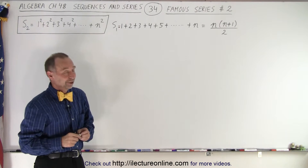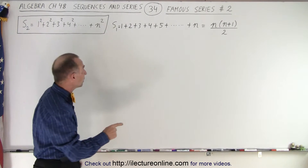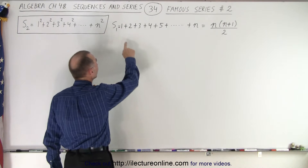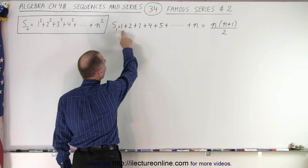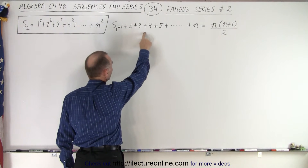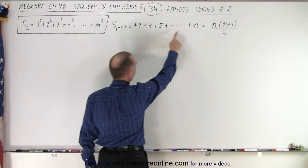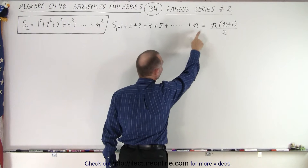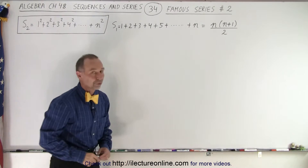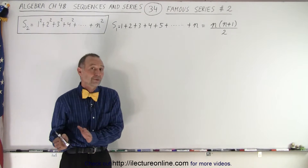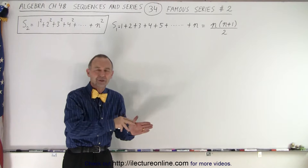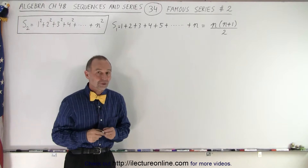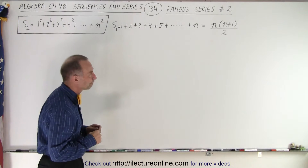It takes a little effort. We also need to remember that this sum right here — 1 plus 2 plus 3 plus 4 plus 5 all the way up to n — is equal to n times n plus 1 over 2. We've already shown you that in the previous video of how to derive that.